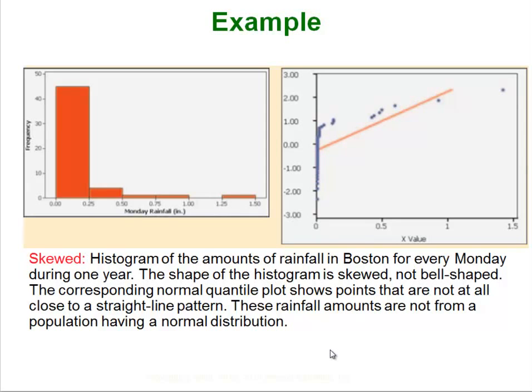That is it. Let the technology run the plot for you and then you are just looking at whether or not it seems normal-ish. There are other measurements that will give you a numerical measurement of how close to normal the data is, and often when you run a normal quantile plot it will give you those measurements along with it, but the easiest thing to do is just look at the plot.